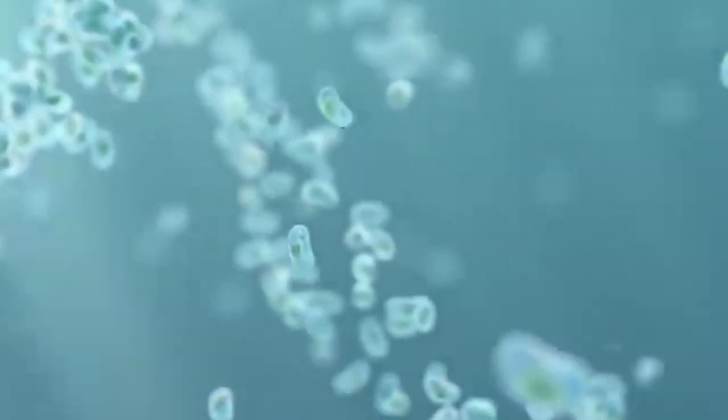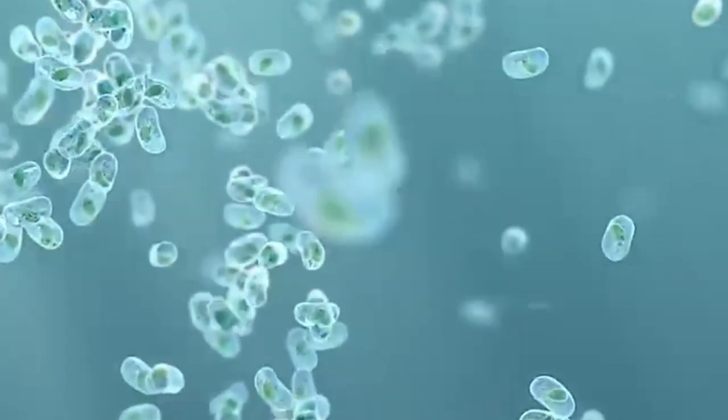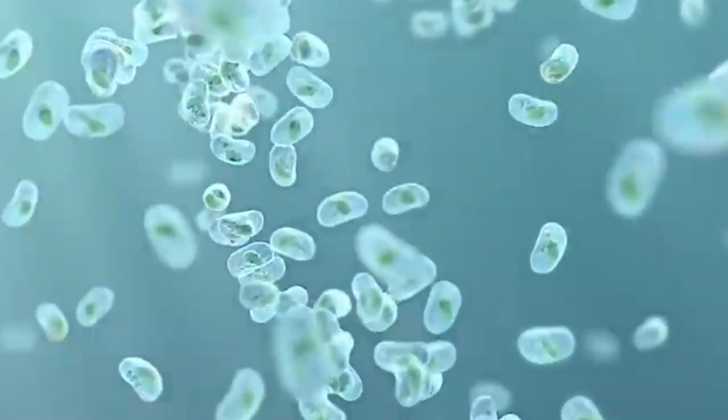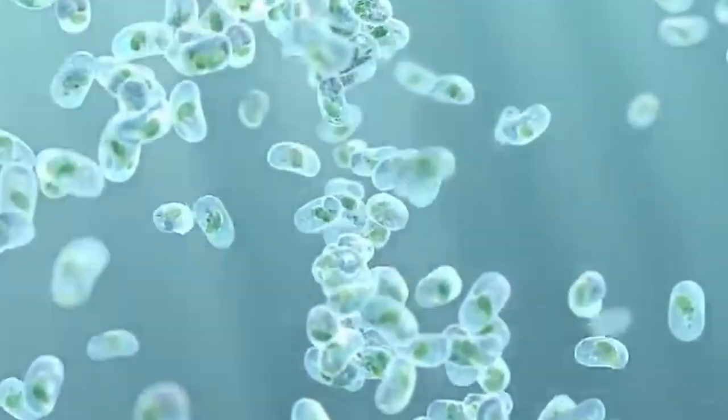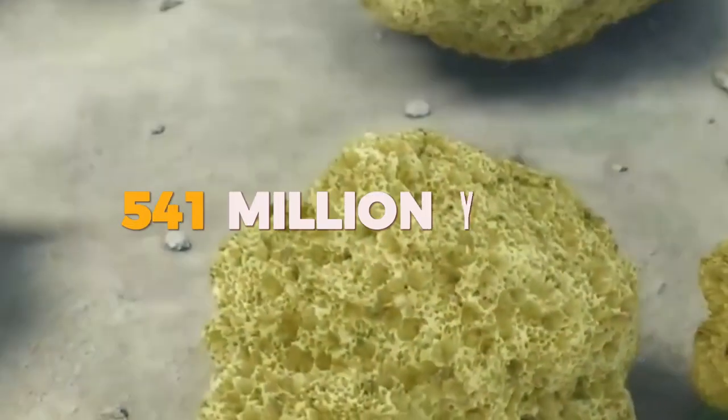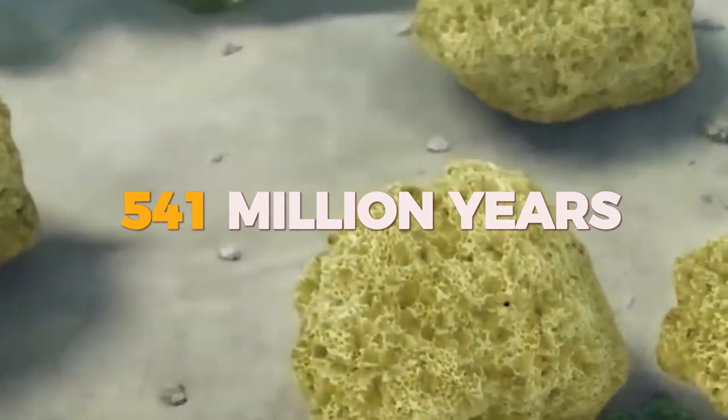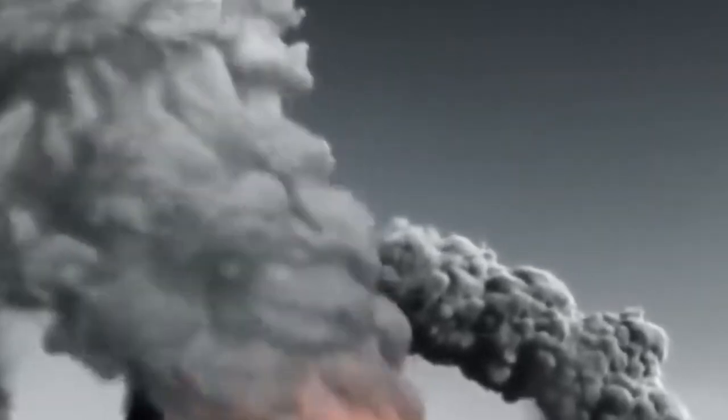In just a blink of the geological eye, Earth had begun its journey from microscopic simplicity to the grandeur of complex ecosystems. Our journey accelerates to approximately 541 million years ago, a time heralded as one of the most remarkable chapters in Earth's evolutionary history, the Cambrian Explosion. This period, spanning tens of millions of years, witnessed an unprecedented burst of biodiversity, marking the rapid appearance of a stunning array of complex life forms.